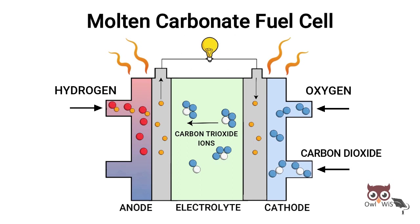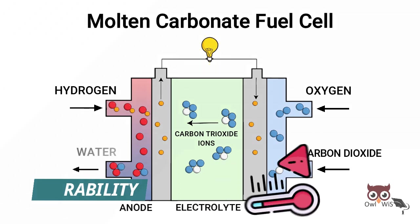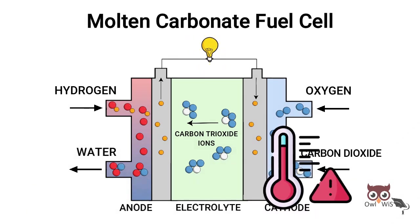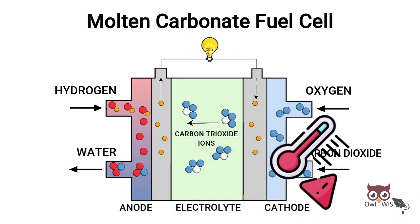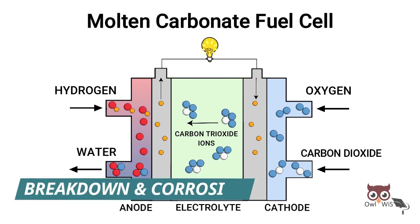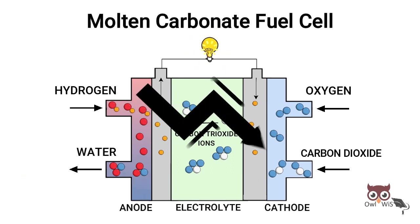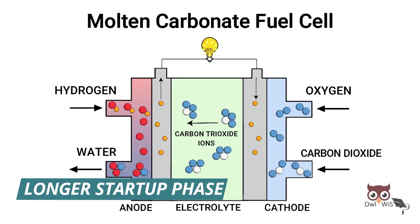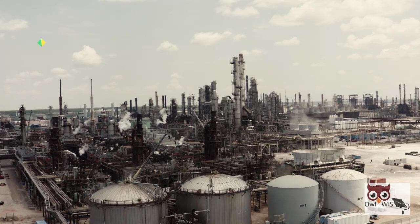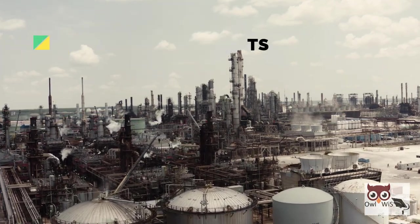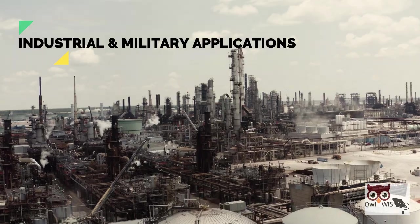When the heat is captured and used, overall efficiencies can be over 85 percent. The main disadvantage is durability. The high temperatures at which these cells operate and the corrosive electrolyte accelerate component breakdown and corrosion, decreasing cell life. Since it has longer startup phase, they have been developed for coal-based power plants for electrical utility, industrial and military applications.